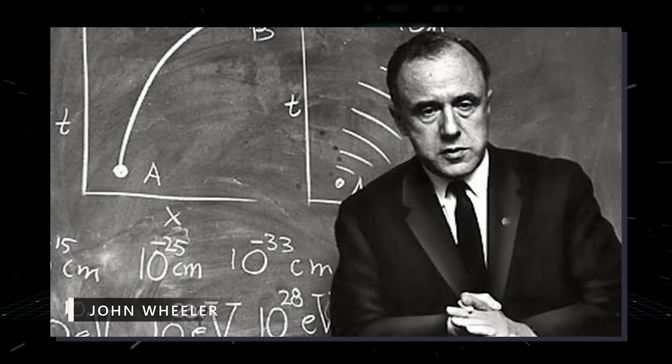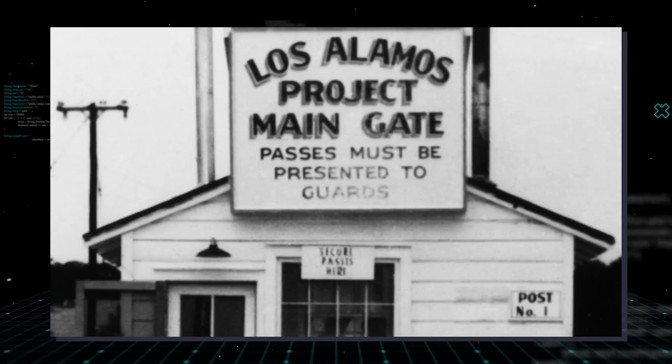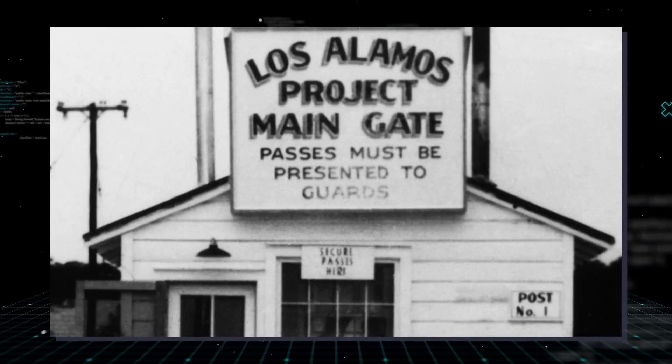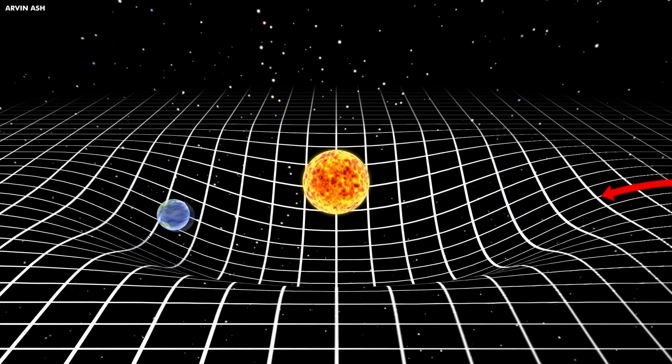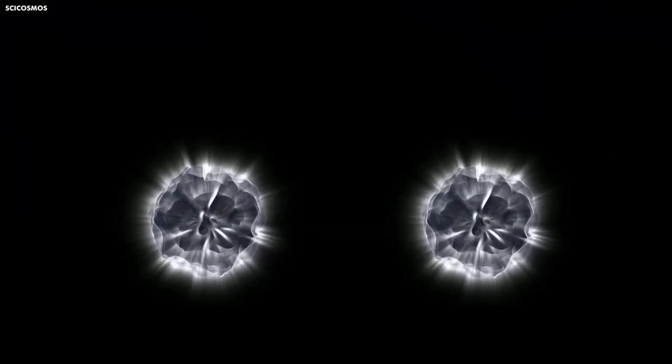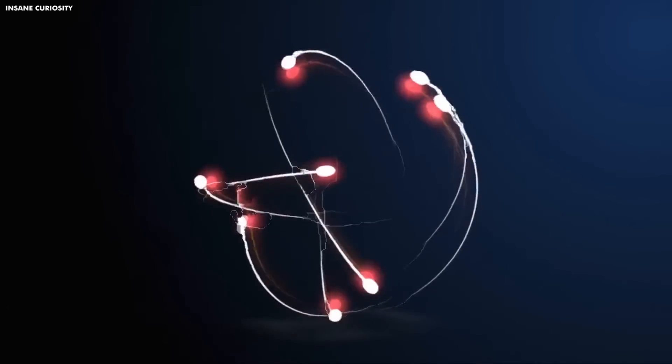John Archibald Wheeler, a theoretical physicist who worked on the hydrogen bomb at Los Alamos and later taught at Princeton, devised the theory. In the 1940s and 1950s, it was largely credited with reigniting interest in general relativity. The idea that every electron is the same electron is known as the one-electron theory. So what is this theory about?